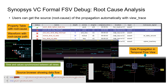When there is a security risk discovered, VC Formal FSV provides all the information you need to root cause the issue. VC Formal shows the path that failed, provides the waveform, temporal flow view, and RTL source to show how data can propagate from source to destination.